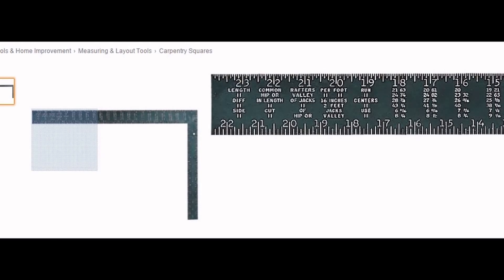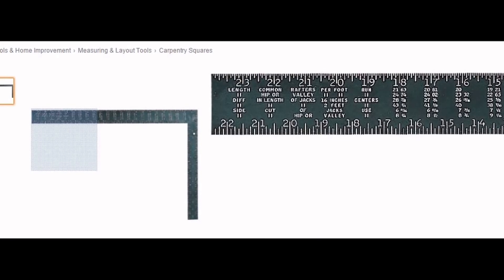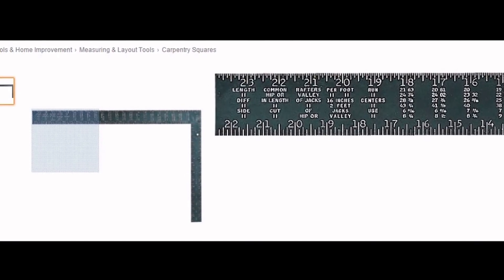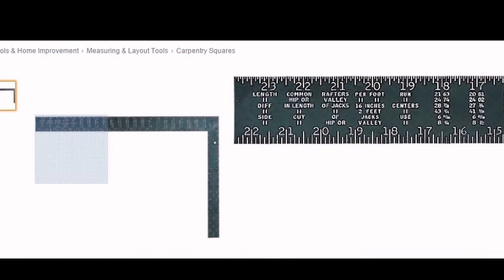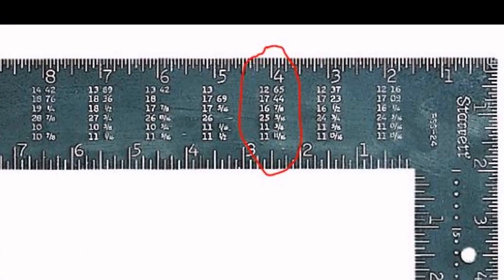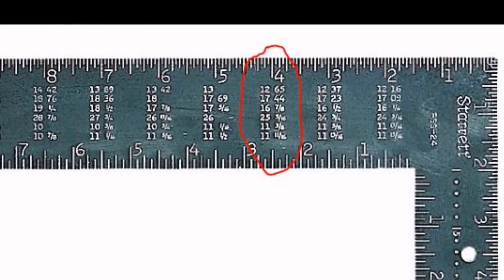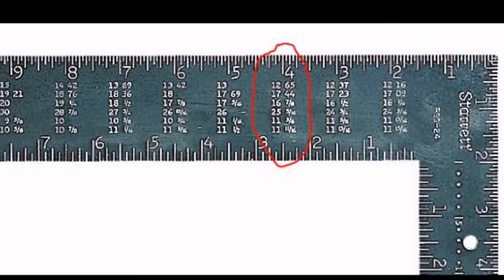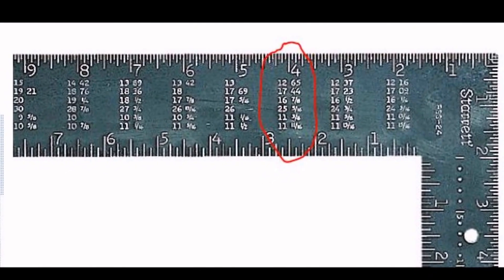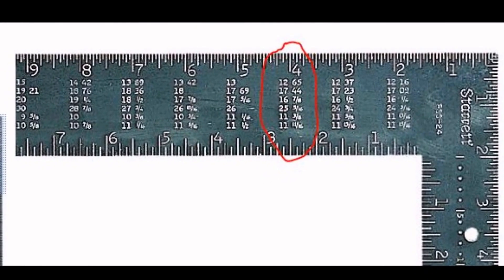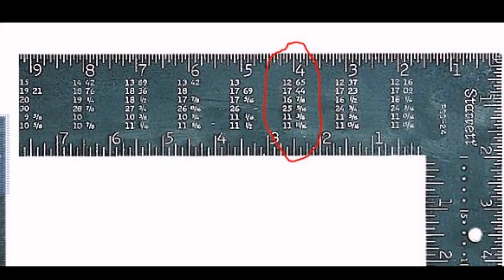I'm an amateur carpenter, but I have a strong background in math and that's given me the desire to understand where these numbers come from. In this series, we're going to look at the numbers under the four inch mark. These numbers correspond to a roof that has a four and twelve pitch — that is, for every 12 inches in run, the roof rises four inches vertically.